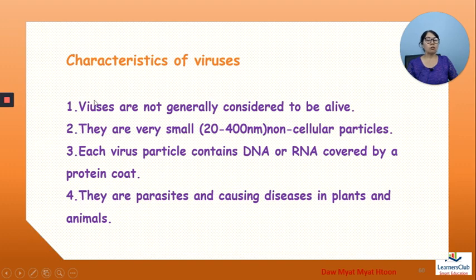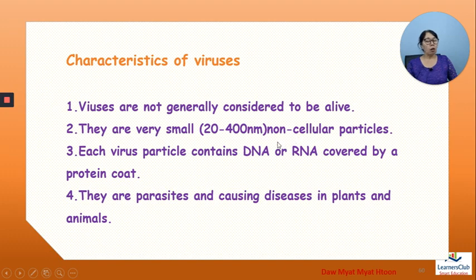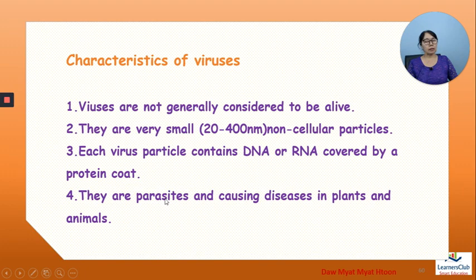Number one: viruses are visible only under a light shield. Number two: size is 2,500 nanometers (nm). Number three: contains DNA or RNA with a protein coat. Number four: parasites. Number five: infect animals and plants.